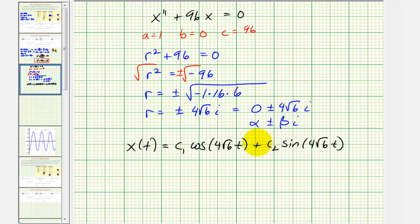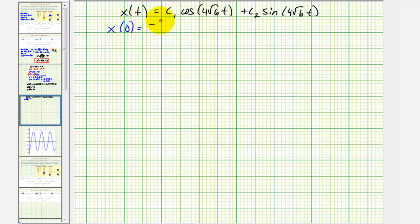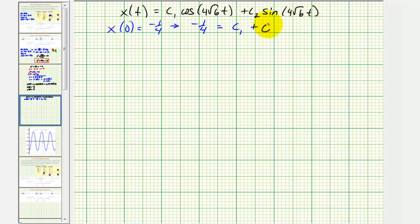Now that we have our general solution, we can find the particular solution since x of zero equals negative one-fourth and x prime of zero equals zero. Substituting t equals zero into the general solution, cosine zero is one and sine zero is zero, so we get c sub 1 equals negative one-fourth.